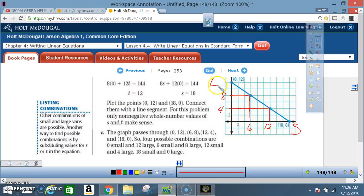All right, continue to example 5. We plot the points 0, 12, and then 18, 0, and then we pick points in between.